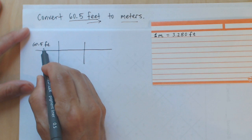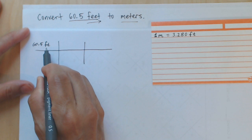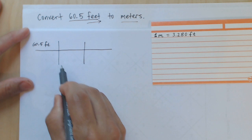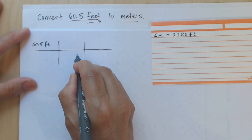We're going to be treating this unit as if it were a variable. So what I need to do now in order to cancel out feet on my way to getting meters is I need to put feet down here.